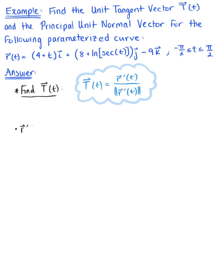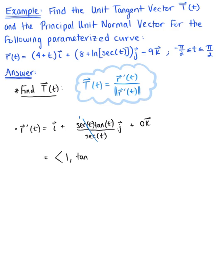The tangent vector r prime of t is going to be equal to 1 times î plus — the 8 differentiates to 0 — the derivative of the natural logarithm of secant of t is secant of t times tangent of t, all over secant of t, times ĵ. Negative 9 differentiates to 0 for the k̂ component. Simplifying, secant divided by secant cancels to 1, leaving us with the vector ⟨1, tan(t), 0⟩.